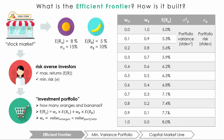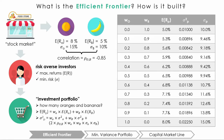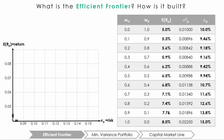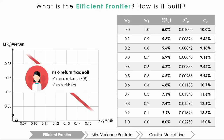Now suppose that these two risky assets are negatively correlated, with a correlation of negative 0.85. Recall that the correlation represents how two assets move together, expressed between negative 1 and 1. So a correlation of negative 0.85 means that when one asset increases in returns, the other asset tends to decrease in returns. Now let's calculate the new standard deviations of the portfolio at different weights.